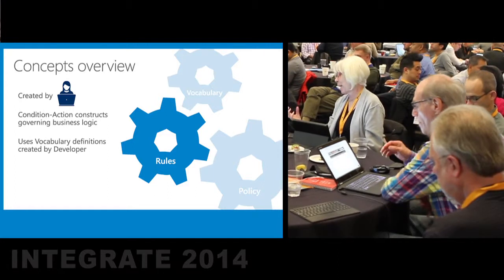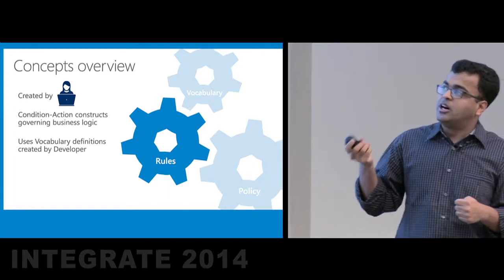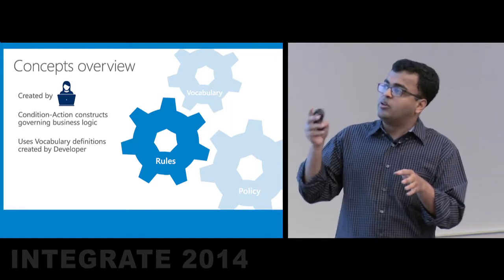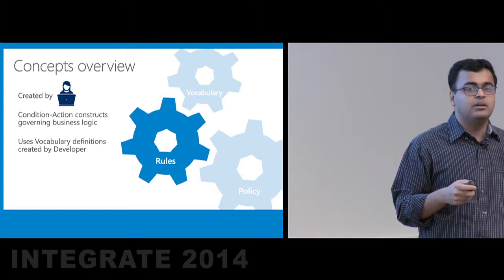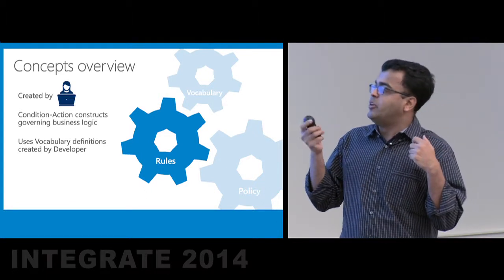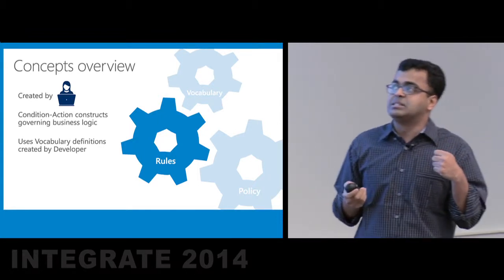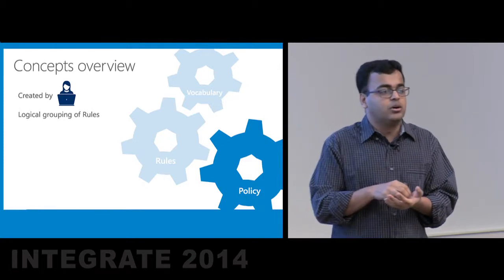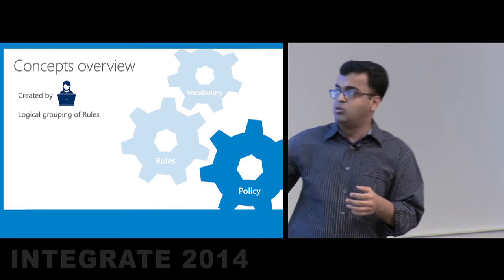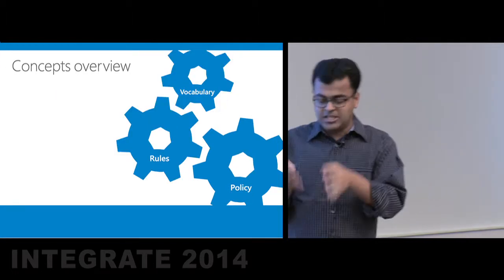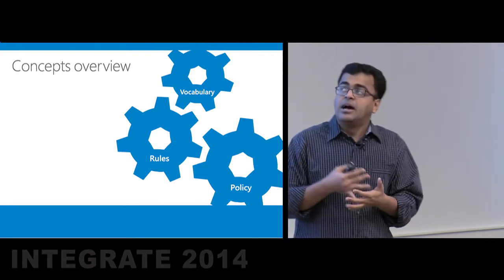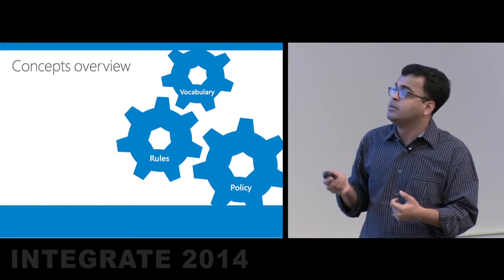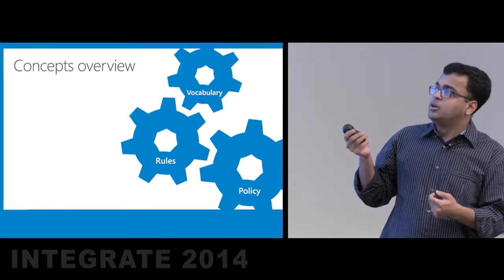Rules are created by the business analyst and are nothing but condition and action constructs — they represent a part of your business logic and use the vocabulary definitions created by your developer. When you put all the rules together, you get a policy. A policy is your single chunk of business logic most pertinent for your code — for example, a business policy for insurance claim processing. It's a collection of rules which allows you to order priority, enable, or disable them. All three together work in tandem to give you a very powerful rules framework.